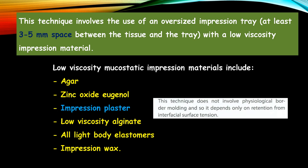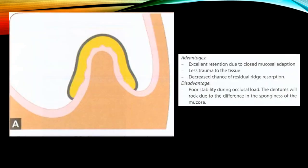Here is a diagram showing the mucostatic technique. In this technique, no pressure is applied on the tissues during impression making. The advantages are excellent retention due to closed mucosal adaptation, less trauma to the tissue, and decreased chance of threshold resorption. The disadvantage is poor stability during occlusal load, and there is a chance of rocking of the dentures due to differences in sponginess of the mucosa.